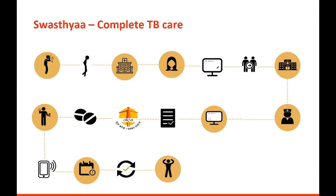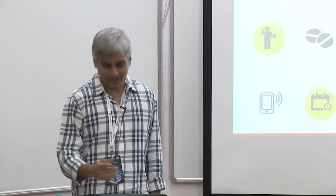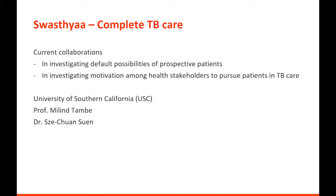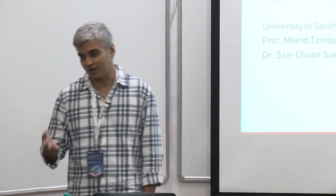We are hoping to launch this in one district with 3,000 tuberculosis patients, though we are starting hopefully with 500. The government wants to start directly with 3,000, which seems a little impossible. We are also discussing with USC a collaboration on how to predict whether a prospective patient or confirmed patient would default, and how to predict whether health workers would be motivated enough to be part of the ecosystem, since motivation is one of the major challenges. Thank you.